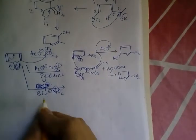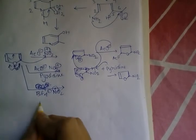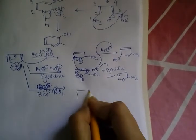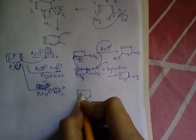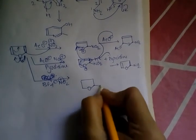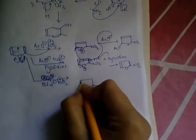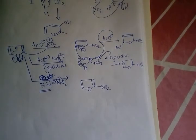If BF4⁻/NO2+ is used as the reagent, one nitro-furan will also form. Since BF4⁻ is a large, non-nucleophilic group, it will not attack the position. Hence, H leaves automatically as H+, and ultimately nitro-substituted furan is obtained.